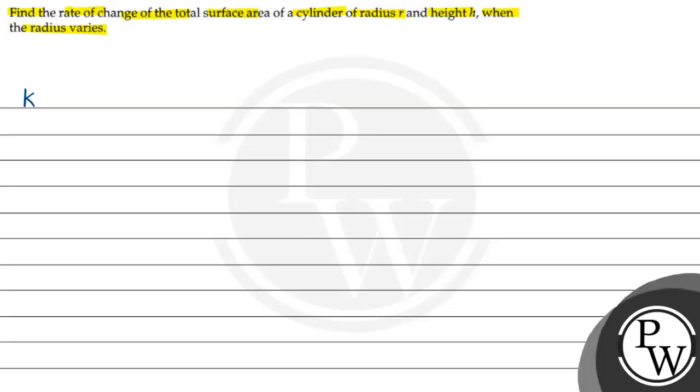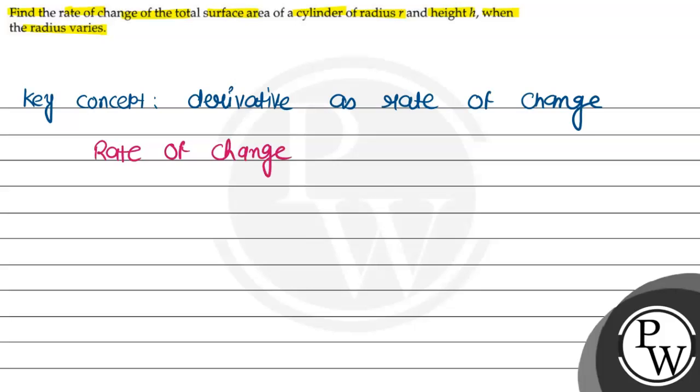Let's see the key concept of the question. The key concept is derivative as rate of change. The rate of change function is defined as when one quantity is changing...